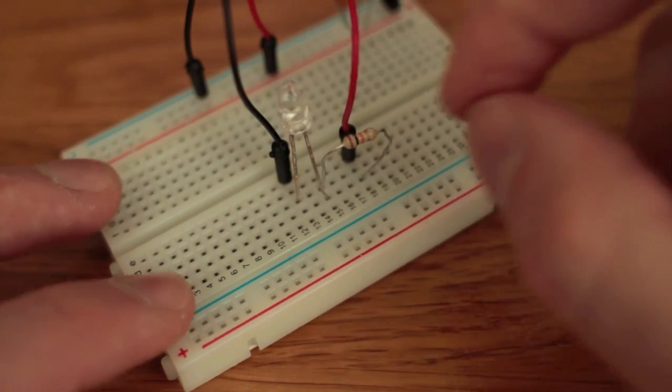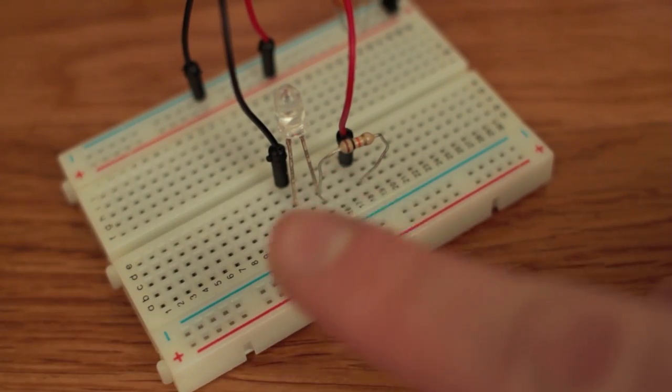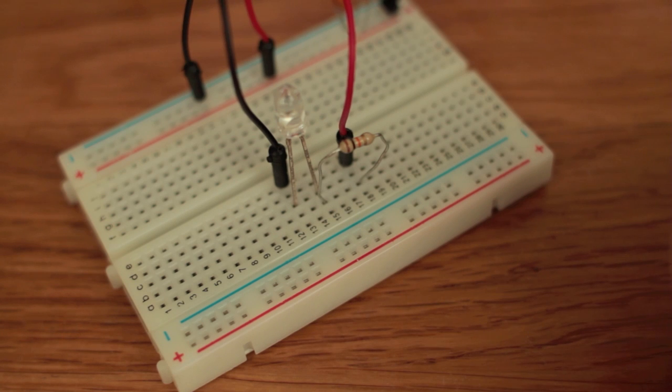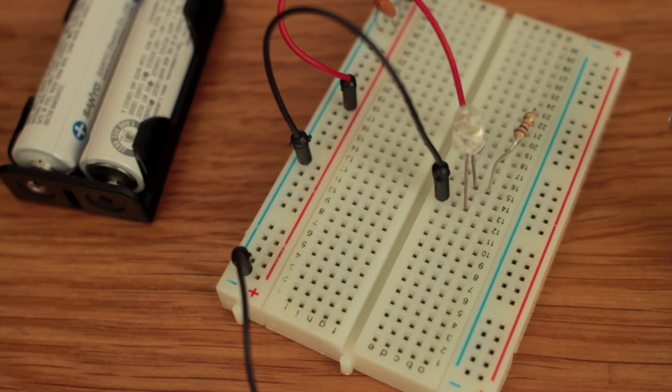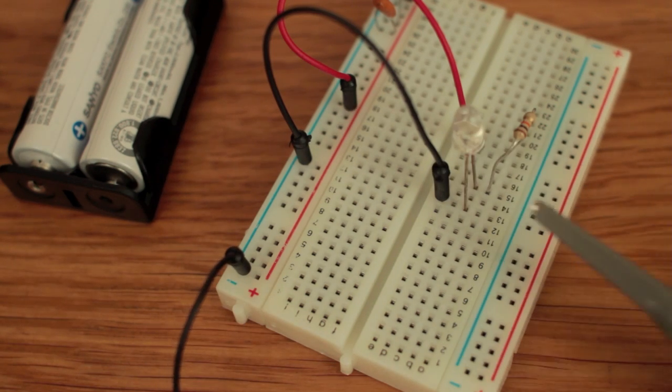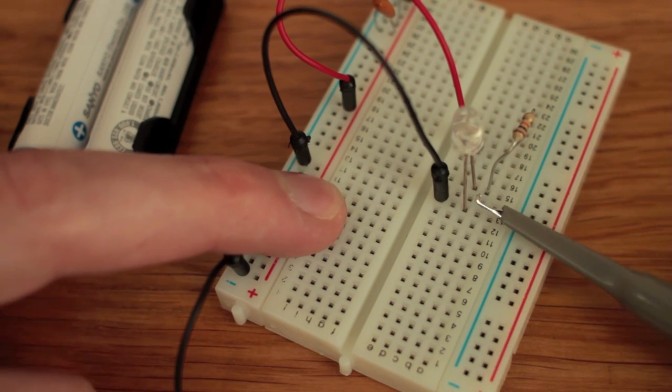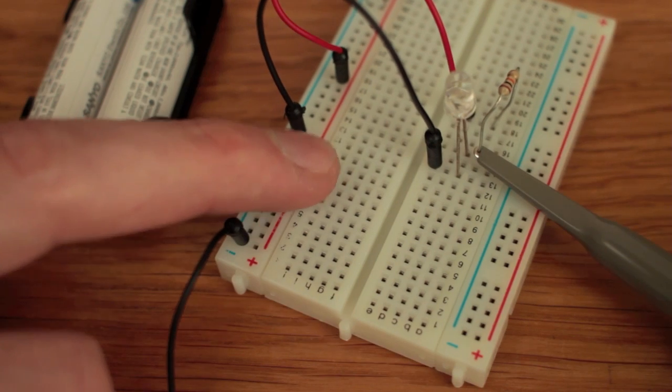Remember, as light strikes the phototransistor, it allows a current to flow. That current flows through the resistor and generates a voltage. It's that voltage that we read as the output. The output of the sensor circuit is the node between the phototransistor and the resistor, so we'll attach the oscilloscope probe right there.